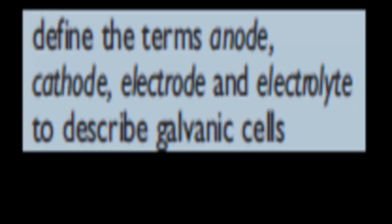Welcome back. In the last video, we outlined the construction of a galvanic cell — what parts had to be present to make a galvanic cell. We also traced the electron flow, and we said that the electrons always flow from the anode to the cathode.